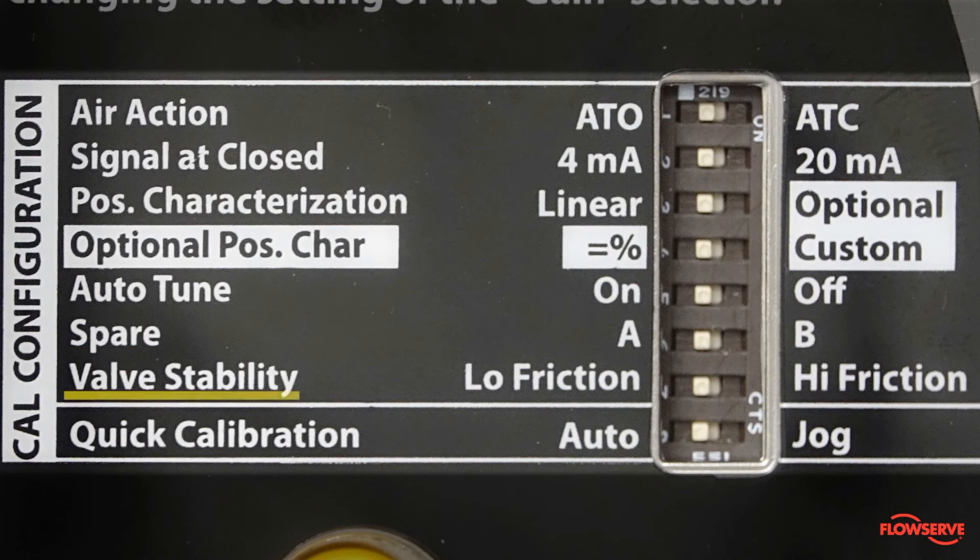The seventh dip switch is called valve stability. Set the dip switch according to whether your packing is high friction, such as graphoil and braided packing, or low friction, such as most Teflon packing.